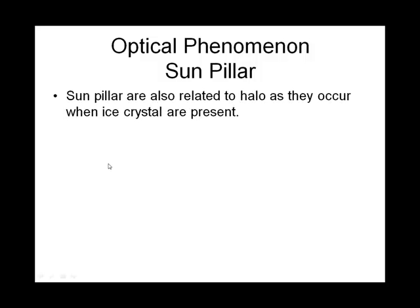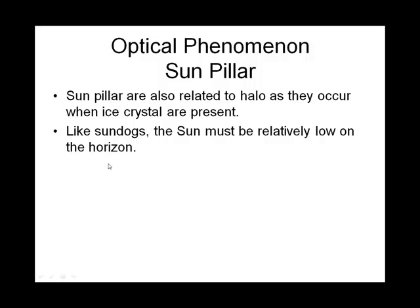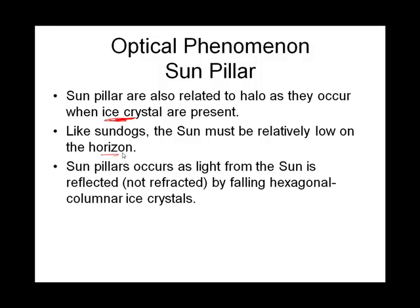Another optical thing you might see is something called a sun pillar. What causes a sun pillar? Ice crystals. The sun needs to be relatively low on the horizon in order for those ice crystals to make this sun pillar. If this is the solar disk, it can actually extend above and below — with the horizon here — and it's basically sunlight being reflected, not refracted, by falling ice crystals.